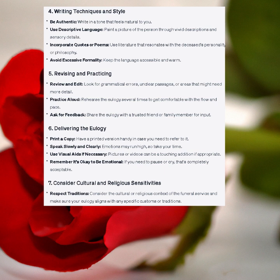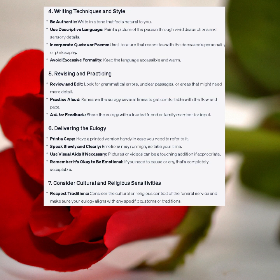5. Revising and Practicing. Review and edit: look for grammatical errors, unclear passages, or areas that might need more detail. Practice aloud: rehearse the eulogy several times to get comfortable with the flow and pace. Ask for feedback: share the eulogy with a trusted friend or family member for input. 6. Delivering the Eulogy. Print a copy: have a printed version handy in case you need to refer to it. Speak slowly and clearly – emotions may run high, so take your time. Use visual aids if necessary – pictures or videos can be a touching addition if appropriate.